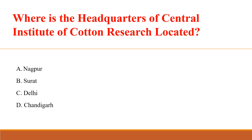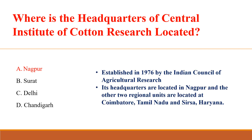Where is the headquarters of the Central Institute of Cotton Research located? Answer: E. Nagpur. Established in 1976 by the Indian Council of Agricultural Research, its headquarters are located in Nagpur, and the other two regional units are located at Coimbatore, Tamil Nadu and Sirsa, Haryana.